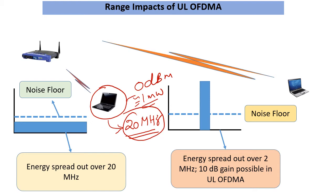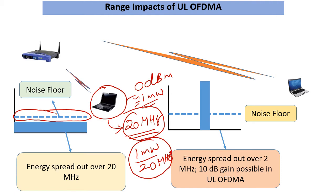Now if you happen to be in a condition where your noise floor — the noise present over the entire bandwidth — is above the received equivalent of that 1 milliwatt over 20 MHz, you will have very poor reception. Basically the station cannot send any uplink data. In fact, it causes problems even for downlink, because downlink typically requires some uplink for real-life applications, so this actually spoils the show even if your traffic was predominantly downlink.